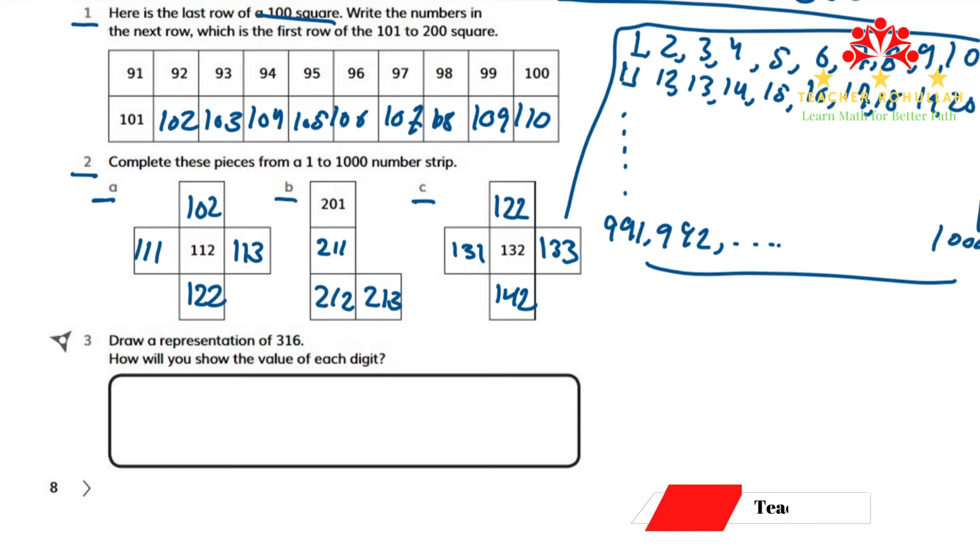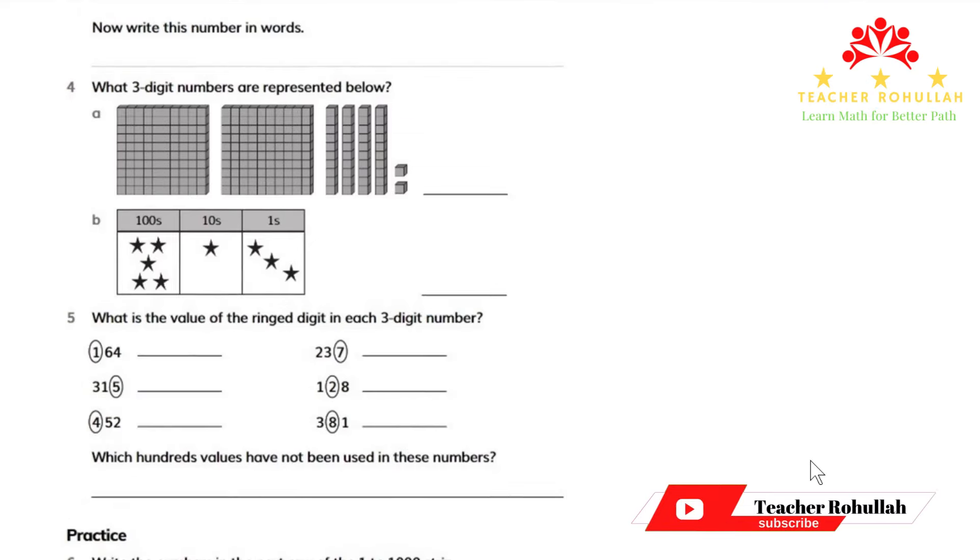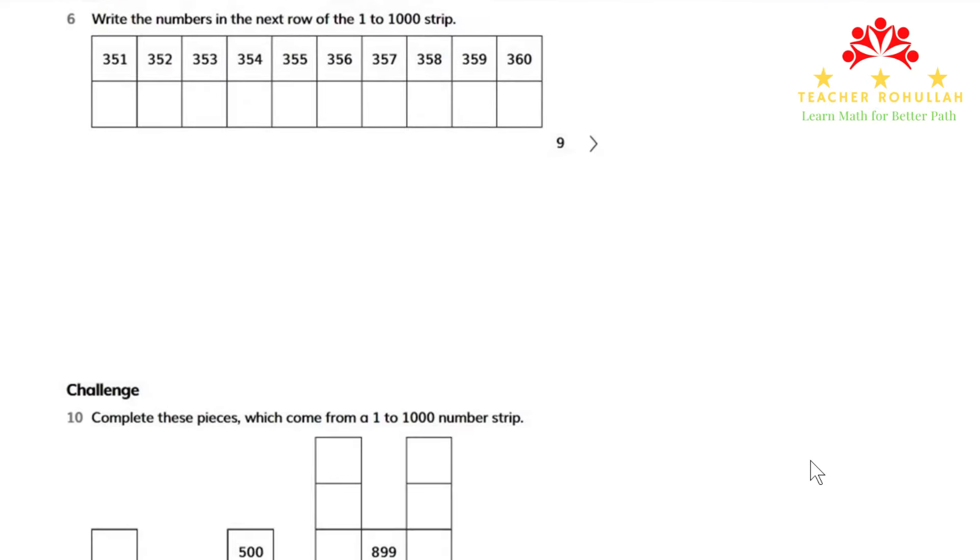Let's now move down to question number 6. In question number 6, it says, write the numbers in the next row of a 1 to 1000 number strip. In this case also, if this is 351, so under it will be 361, 362, 363, 364,